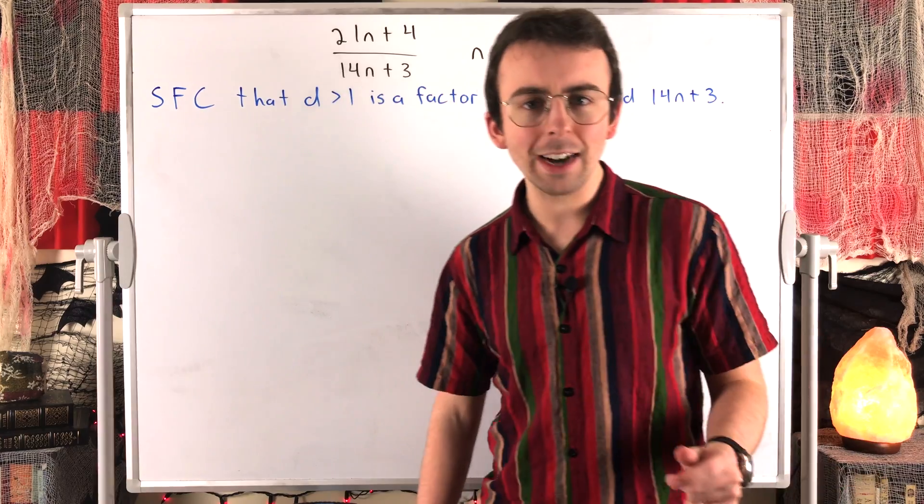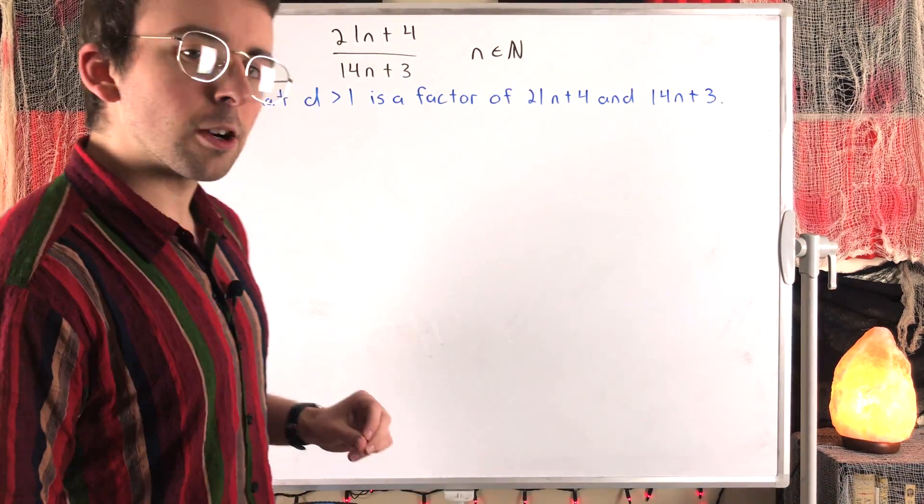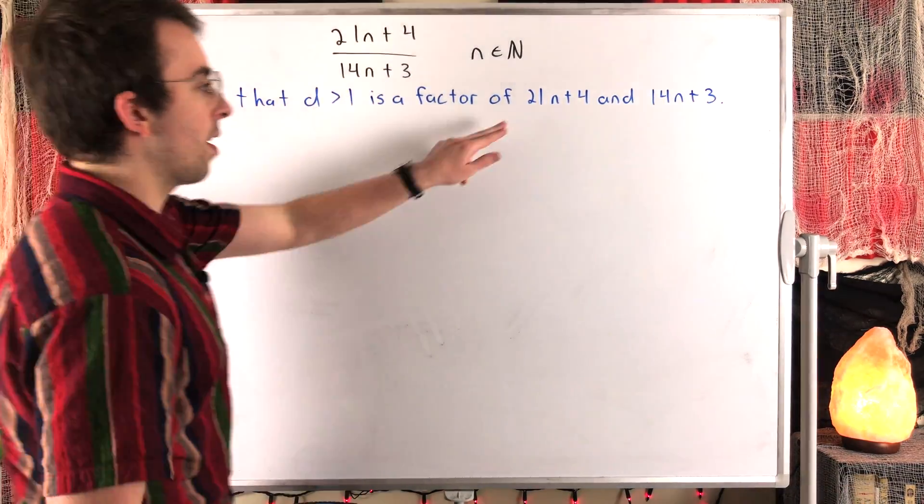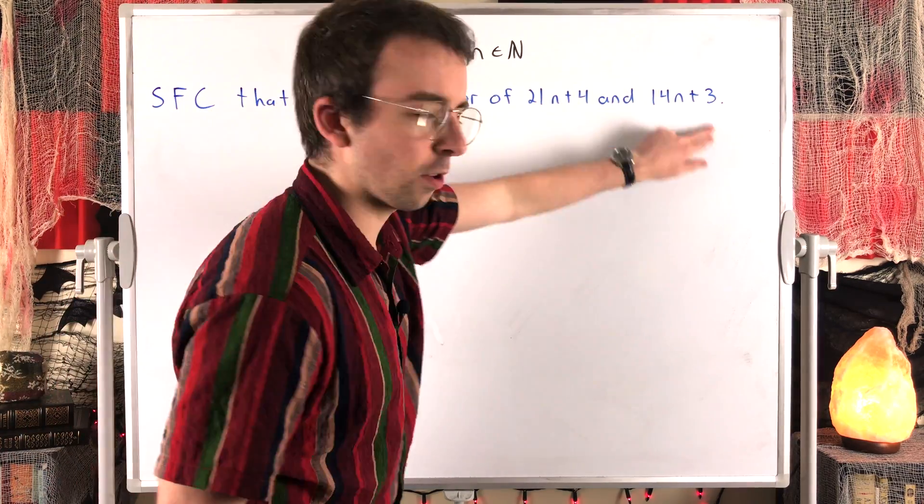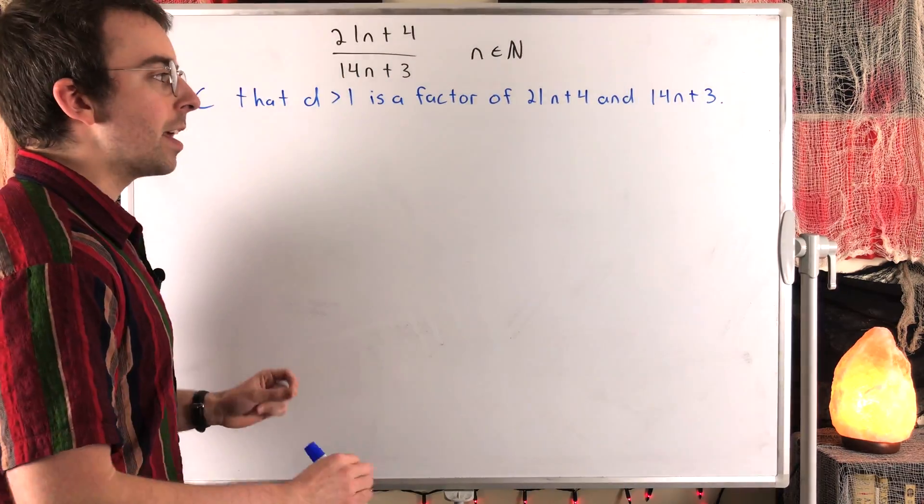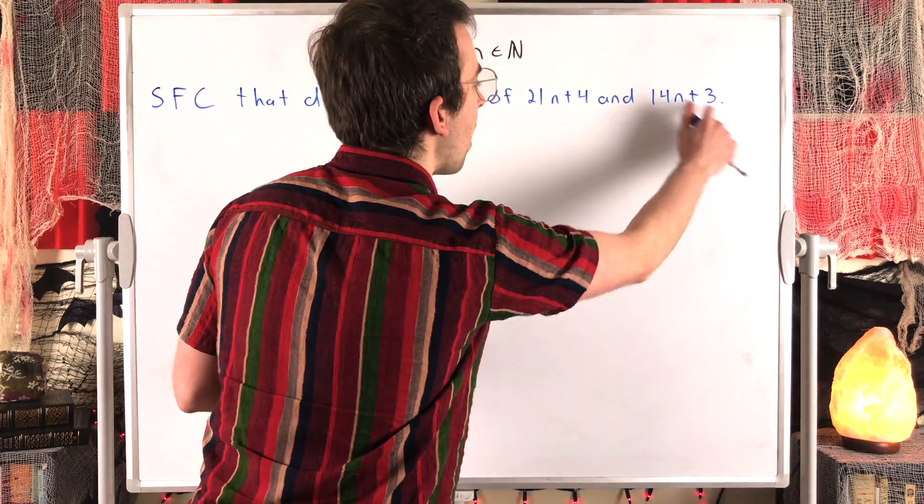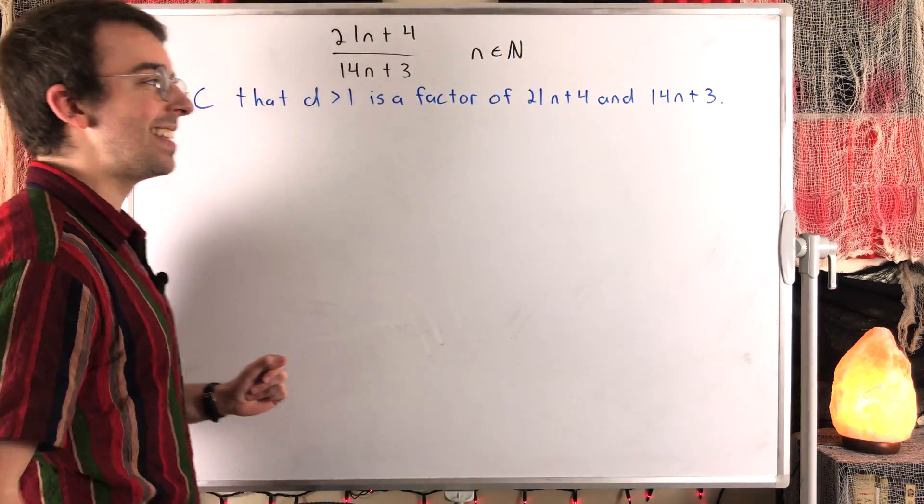So what are some mathematical statements that we could make right now? We know that D is a factor of this, and D is a factor of that. So that means, for example, if we divide 14n plus 3 by D, there will be a remainder of 0, because D is a factor of 14n plus 3.